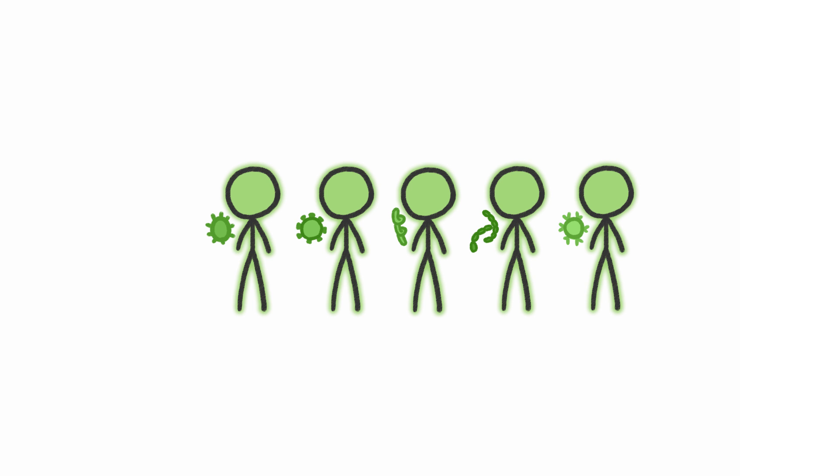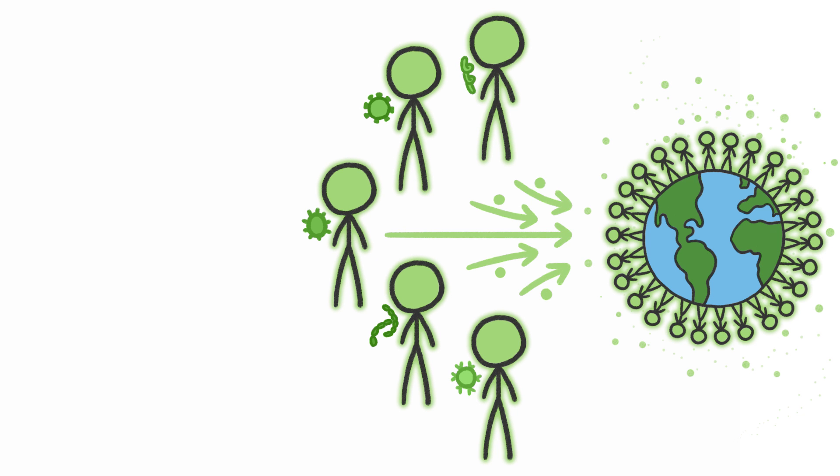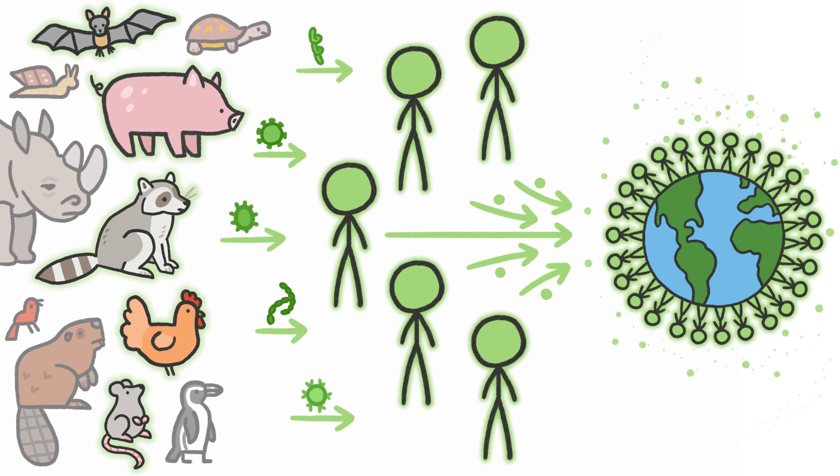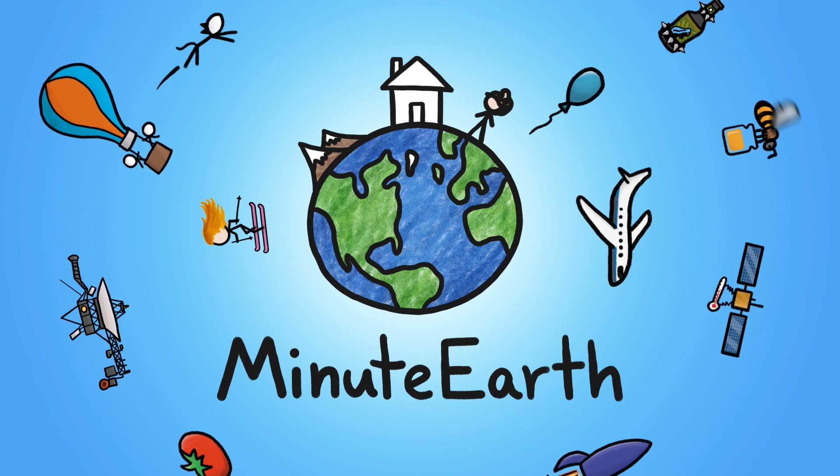Every year, humans get infected with a few new diseases that could potentially cause a pandemic. And most of these new diseases come from animals. But some types of animals are way more likely to pass along these kinds of diseases than others. I'm David, and this is MinuteEarth.